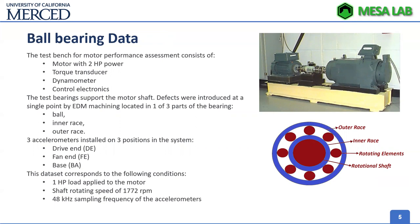The test bearing supports the motor shaft, and special defects were introduced at single point EDM machining located in one of three parts of the bearing: the ball, inner race, and outer race. For each case, there are three accelerometers installed in three different positions — the drive end, fan end, and the base. The dataset consists of one horsepower load applied to the motor shaft rotating at 1772 RPM.